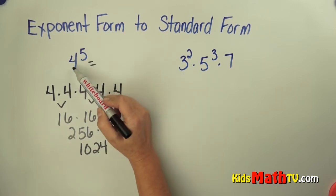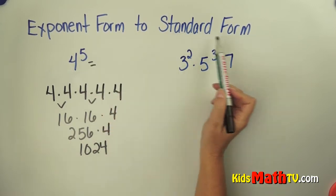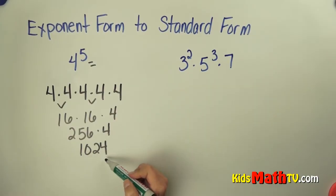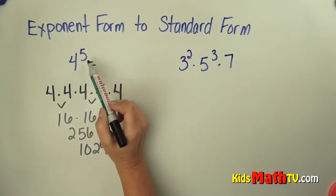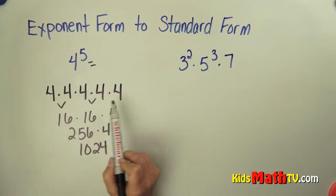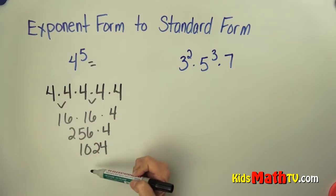So the exponent form is 4 to the 5th. The standard form is 1,024. So you go through rewriting it all out, 5 fours, multiplying and finding the answer or the standard form.